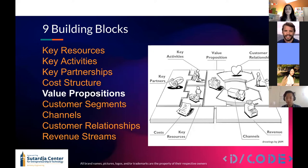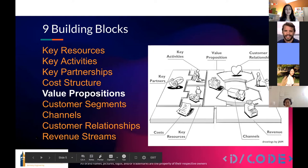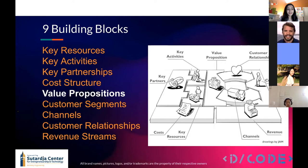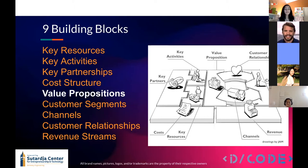Customer segments are the different groups of people a business aims to target and attract. Channels describe how a company communicates with its customer segments to deliver value. Customer relationships are the types of relationships a company must establish and maintain to manage those segments. Revenue streams represent the cash a company generates from each customer segment. Value propositions are the critical element that glues the entire canvas together, bridging value creation and value distribution — examples include cost reduction, increased revenue, or increased profits.